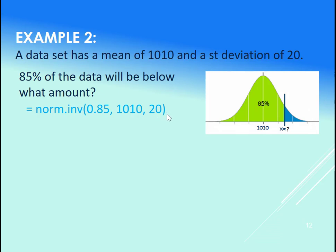Nope, we don't do the comma 1 for cumulative if we don't need it when we're doing norm.inv. It's assuming we're working with the cumulative density function. And wanting the area to be that 85%. And when we plug that into Excel, we get 1,030. Let's go try that in a minute.